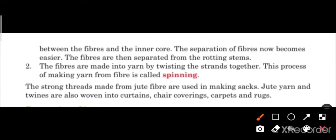Due to retting (soaking in water), the inner bonds between the fibers become loose, making the separation of fiber easier. The fibers are then separated from the rotting stem. The fibers are made into yarn by twisting the strands together.